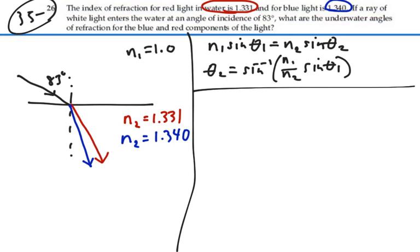All right, so for the red light, we'll have theta 2 equal to the inverse sine of N1, which is the air, over the index of refraction of red light in water, which is 1.331, sine of incident angle of 83 degrees.